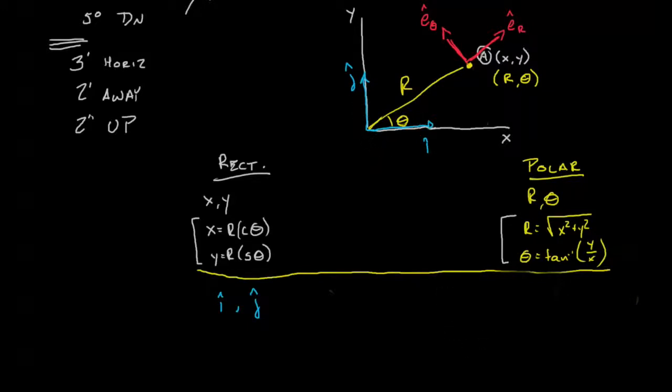And of course, we also have the k unit vector. We can also define the unit vector in the polar coordinate system. e r is equal to whatever the position vector is to point A, divided by the magnitude of that position vector.